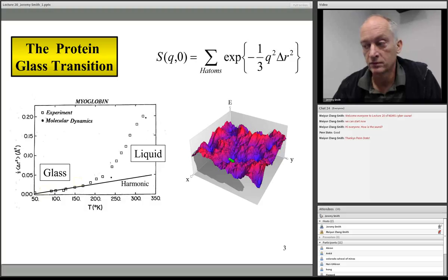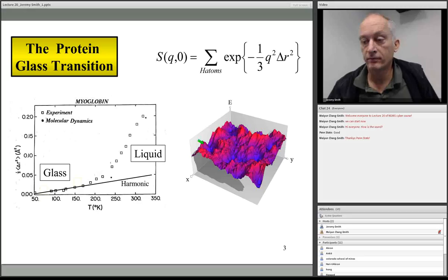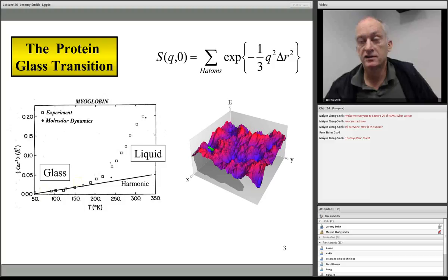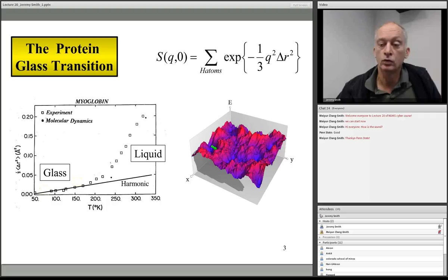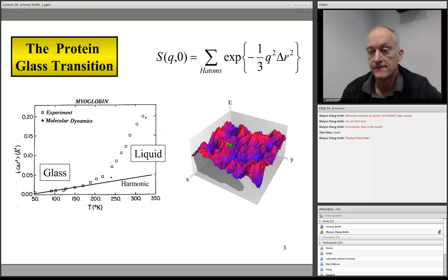At low temperatures, the protein is just vibrating in single energy wells. When there's enough kinetic energy, it's able to jump over the barriers — crossing the low passes between wells. Crossing these barriers leads to quasi-elastic neutron scattering, and it leads to acceleration in the temperature dependence of mean square displacements, making the system look liquid-like. Liquid-like behavior is when these barriers can be crossed and things become more fluid.